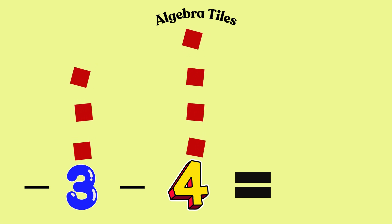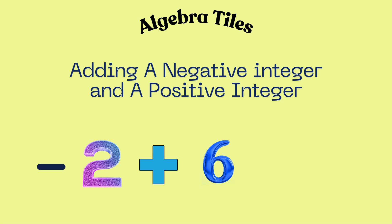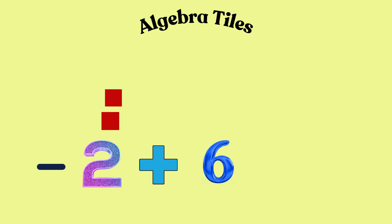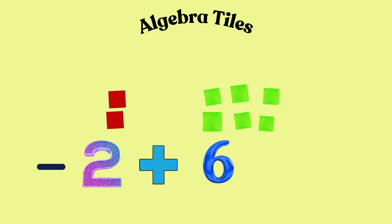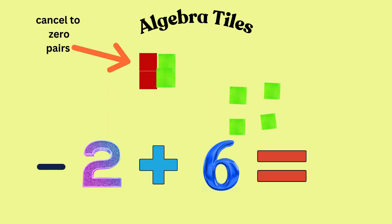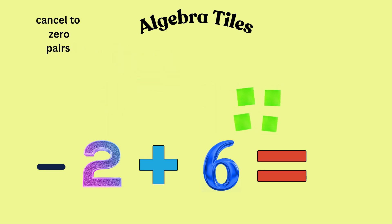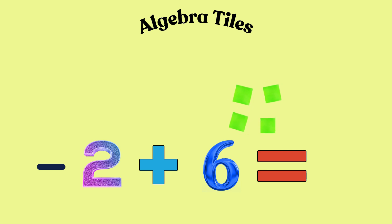Now here's where things get interesting. What if we were to add a positive and a negative number? Let's calculate negative 2 plus 6. We will use two red tiles to represent the negative 2 and six green tiles to represent the positive 6. Here, each green and red tile pair cancel each other out — we call them zero pairs. After canceling, we're left with four green tiles. So negative 2 plus 6 is equal to 4.